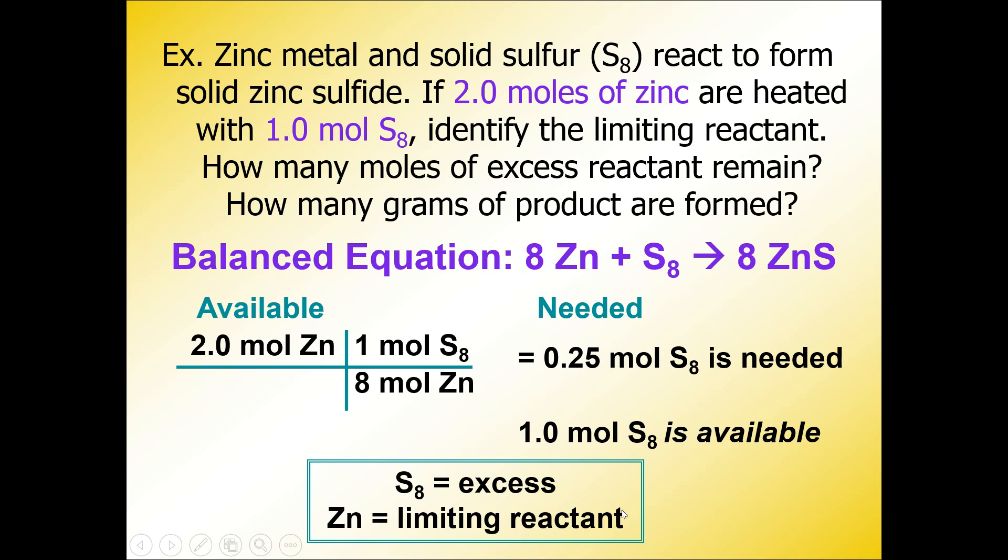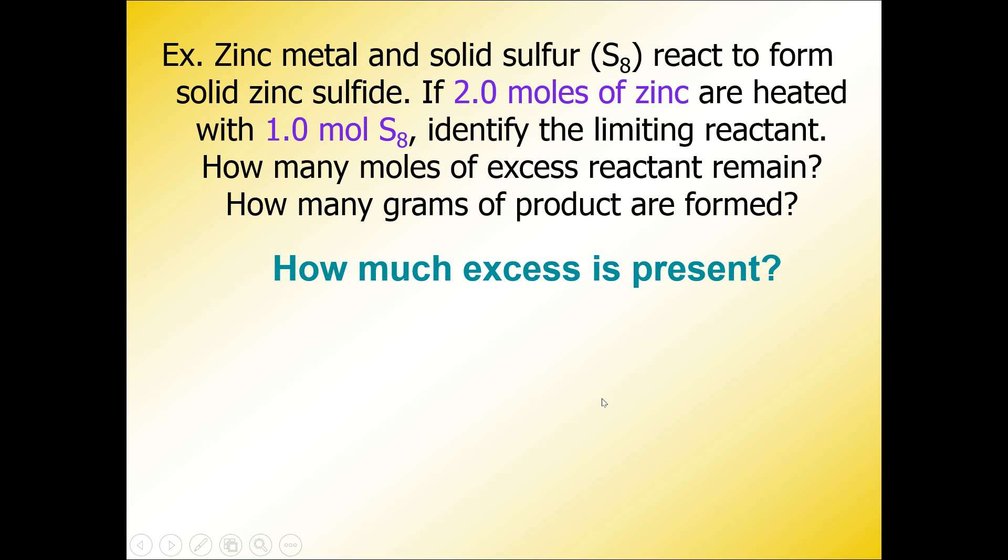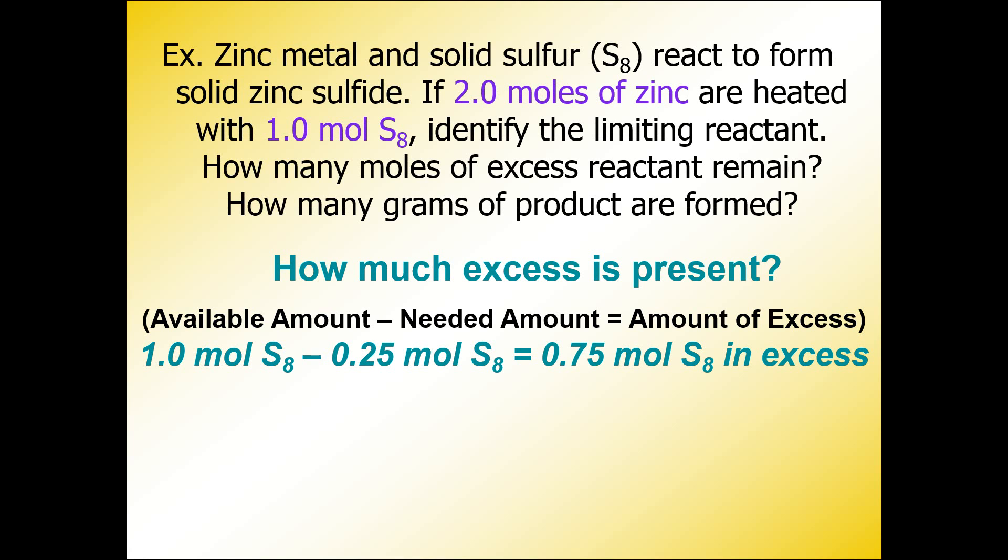The second question in this problem reads: how many moles of excess reactant remain? You could almost just use some simple common sense here. If you have one mole available and you only need 0.25 moles, you just subtract the two values from each other. Here is that calculation written out: available amount minus needed amount gives you the amount of excess. We calculate there is 0.75 moles - there will be 0.75 moles of sulfur in excess.